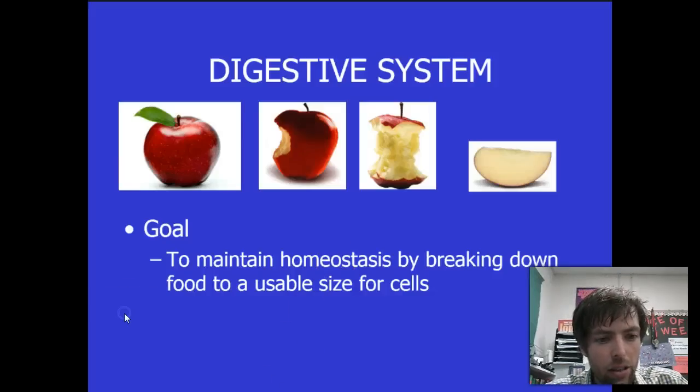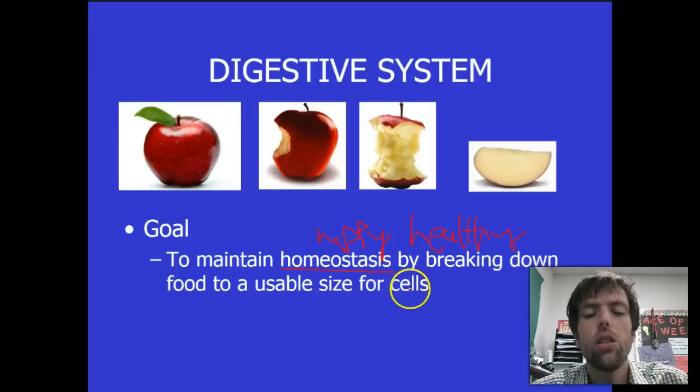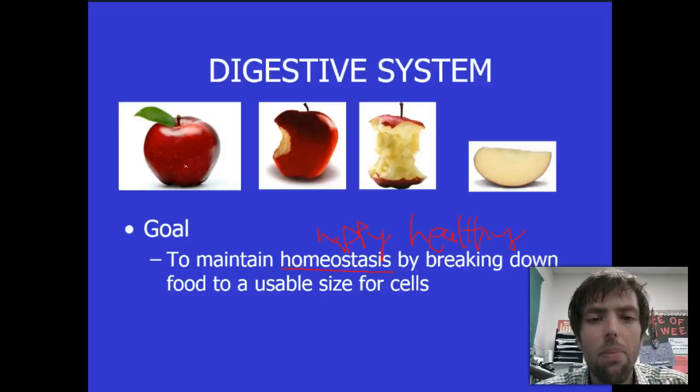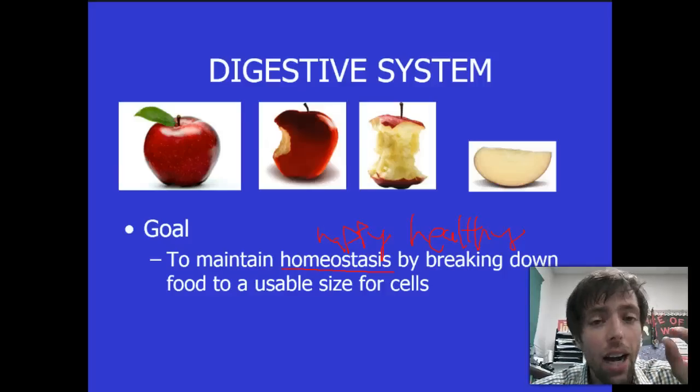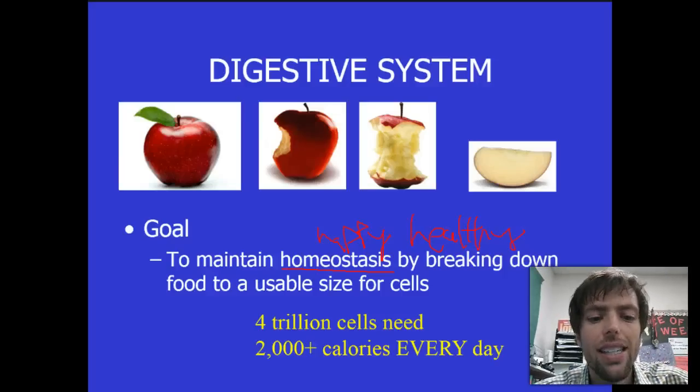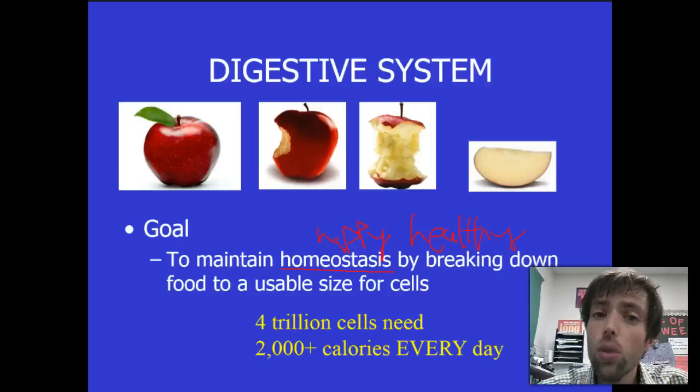Now, if it's been a while since you remember homeostasis from when we talked about the cell membrane, remember homeostasis means happy and healthy. So, it's keeping your cells happy and healthy by breaking down food to a usable size. My cells don't know what to do with an apple. An apple is ridiculous. It's like the size of a planet to me. But, if I can break that down into little tiny molecules of carbohydrates, then my cells think that's a party.